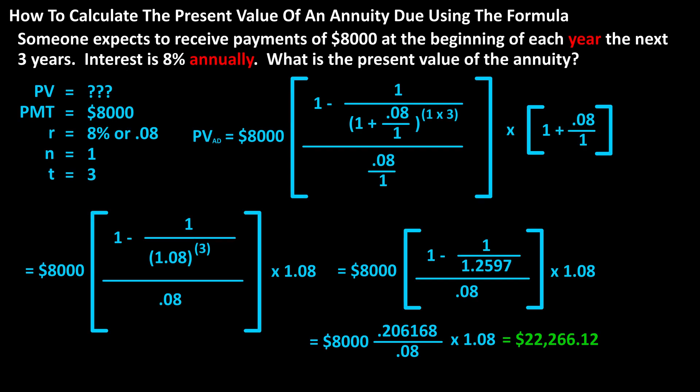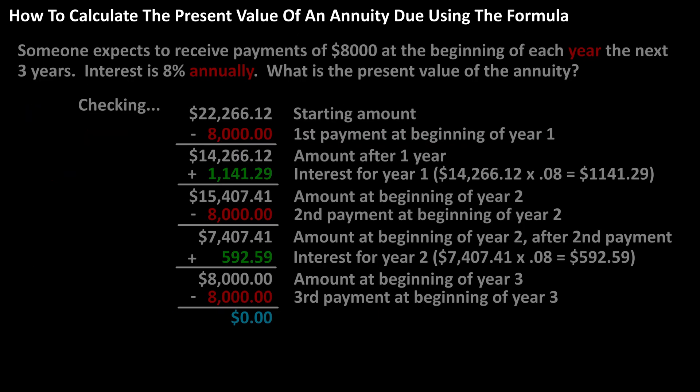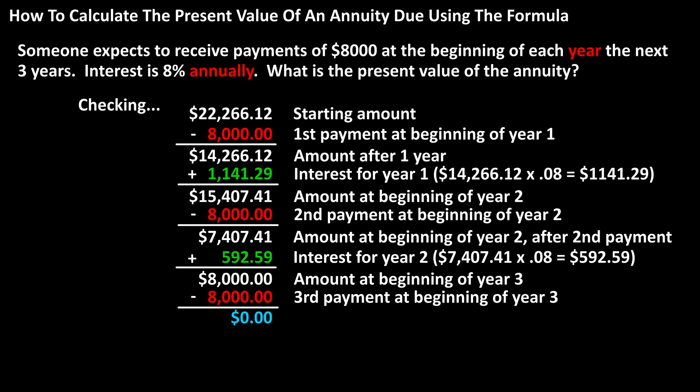And here is another example, but this time the payments are at the beginning of each year for 3 years, so n will be equal to 1. We get a present value of $22,266.12. And here is this value checked and explained in detail. At the bottom, we do get a zero value after all of the payouts.